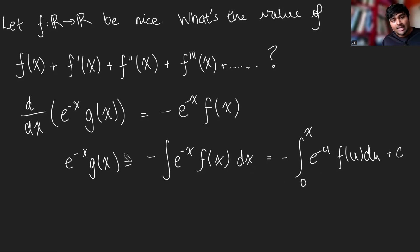So, okay, cool. And so then to get g(x), we just multiply both sides by e^x. So we get g(x). Therefore, g(x) = e^x multiplied by this thing here: minus the integral from 0 to x of e^(-u)f(u)du plus a constant c.